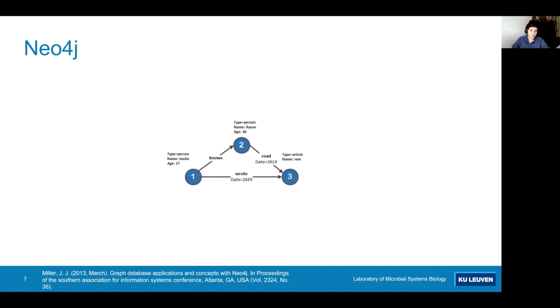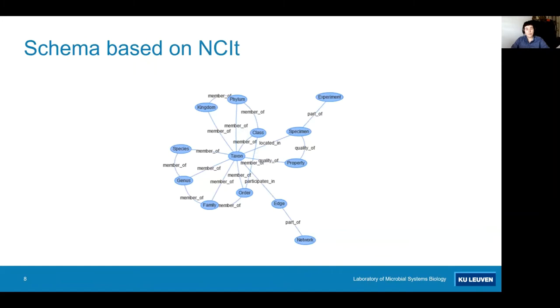So what exactly is a graph database? Well, if we have a relational database, a more traditional type of database, these store data as tables, meaning that we would have a table with source nodes, target nodes, and the weight of the association between them. A graph database, on the other hand, stores data as nodes and relationships between those nodes. In this Neo4j example, we can see that we have two people, Justin and Aaron, which are both represented as a node, and we have an article. One of them wrote the article, and the other read the article.